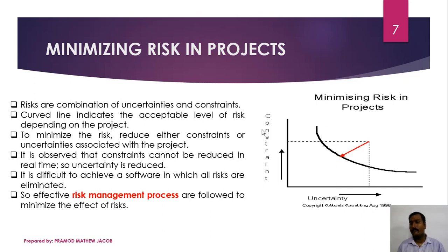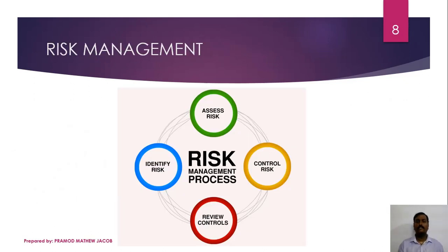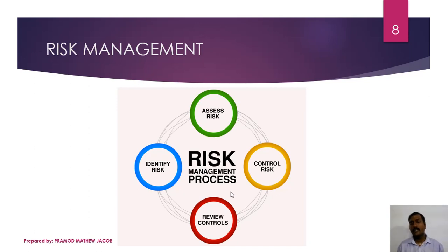Effective risk management processes are followed to minimize the effect of risk. The risk management process consists of four phases. The first step is to identify the risk associated with the software product. Then we assess the impact of each identified risk - how it will affect the development process or lead to the failure of the project. Next we control the particular risk, trying to reduce its impact level. After that we do a proper reviewing measure so that the risk impact does not increase over time.